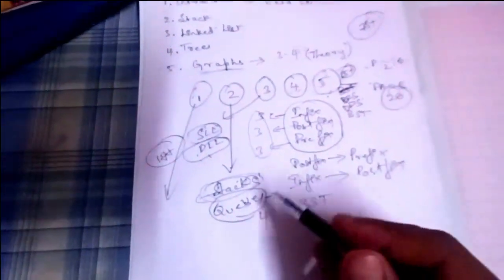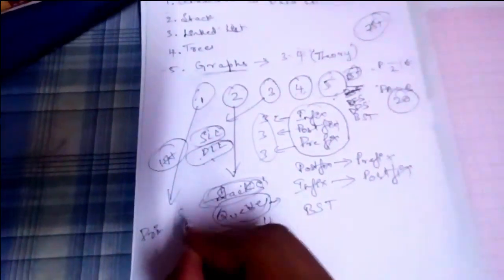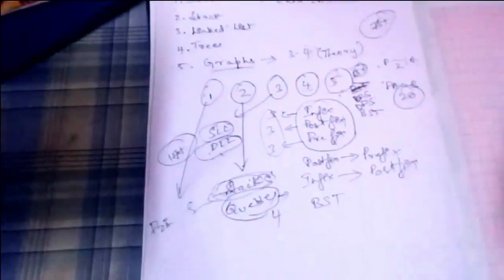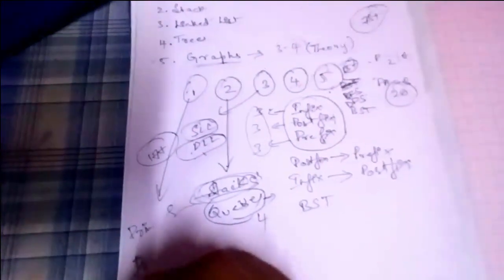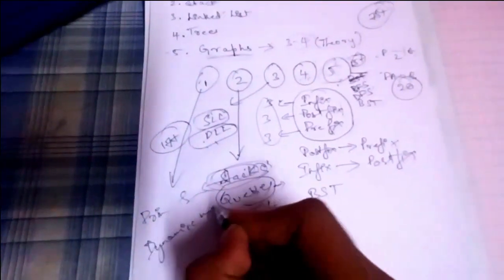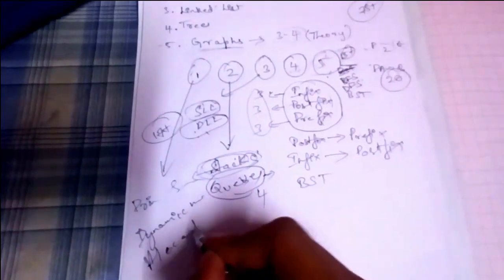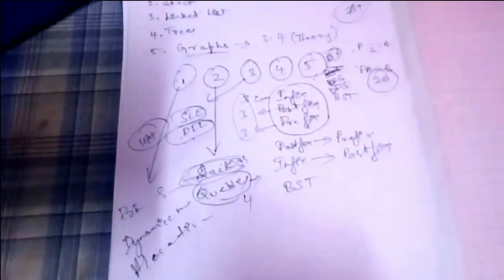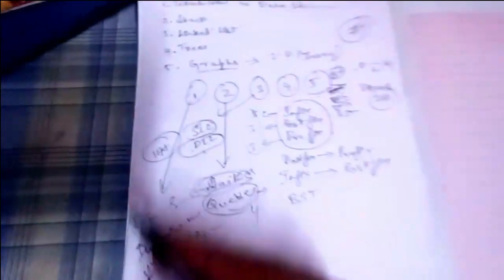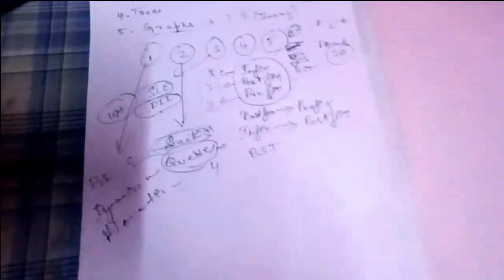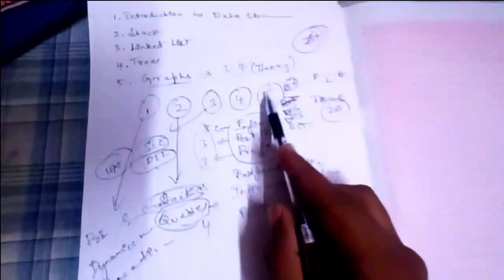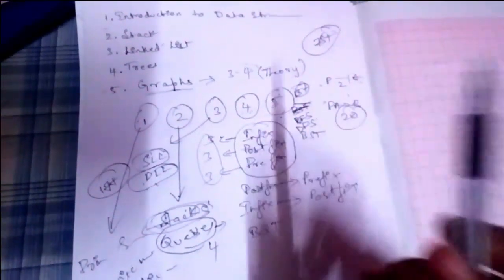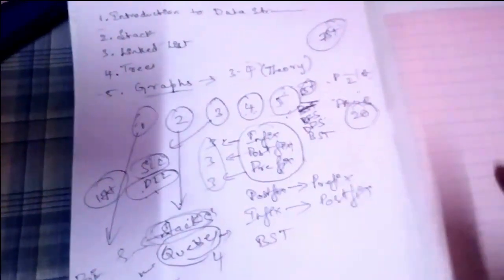For the first module, Introduction to Data Structures, topics include primary data structure, primary memory, secondary memory, and dynamic memory allocation. This module is a bit difficult. If you study five to six important questions related to the first module, that is enough. To recap: for the fifth module, go with theory only.